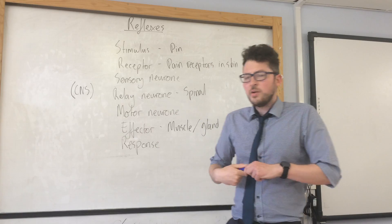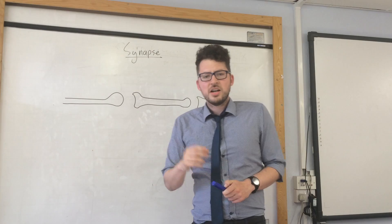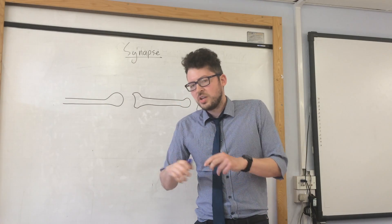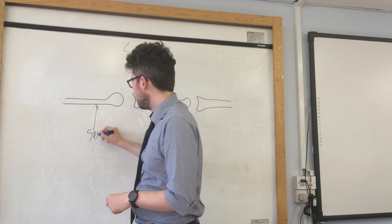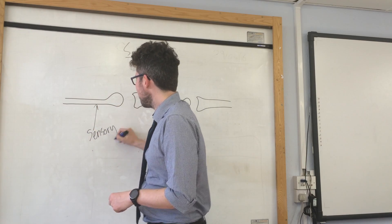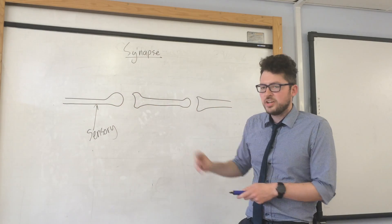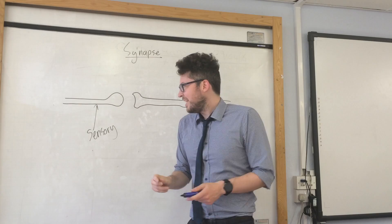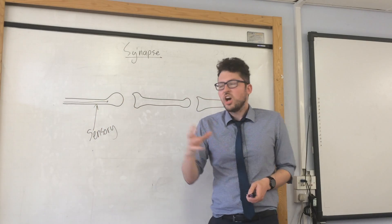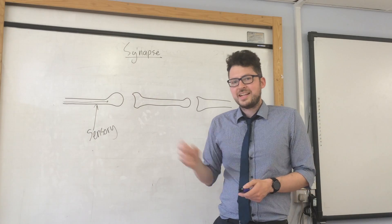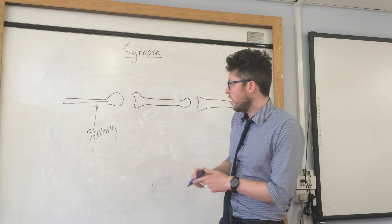Another thing you need to know is about synapses. Synapses are the gaps between different neurons. Here we have the sensory neuron, and the message must get from the sensory neuron to the relay neuron. It's travelling by an electrical impulse, but electricity can't jump over that gap.